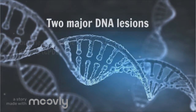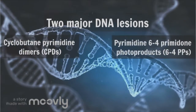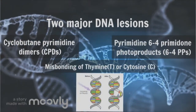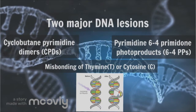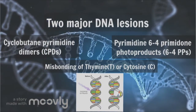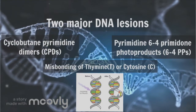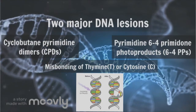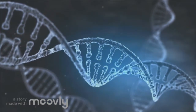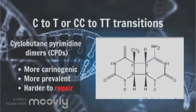This process induces two major DNA lesions: cyclobutane pyrimidine dimers, or CPDs, and pyrimidine 6,4-pyrimidone photoproducts, or 6,4-PPs. These lesions are caused by the misbonding of two pyrimidines, either thymine or cytosine, within the same DNA strand. Both of these lesions can lead to genetic mutations including C-to-T and CC-to-TT transitions.